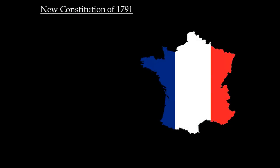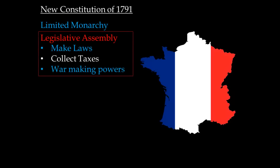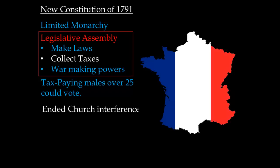The final thing we're going to look at today is the new constitution, which is adopted in 1791 in France. What it does is institute a limited monarchy — meaning there's still a king, but the king now has to abide by some rules. It's no longer an absolute monarchy, which gave the king total power. It created a legislative assembly that could make laws, collect taxes, and had war-making powers, very similar to the United States Congress. Also, only tax-paying males over the age of 25 could vote.